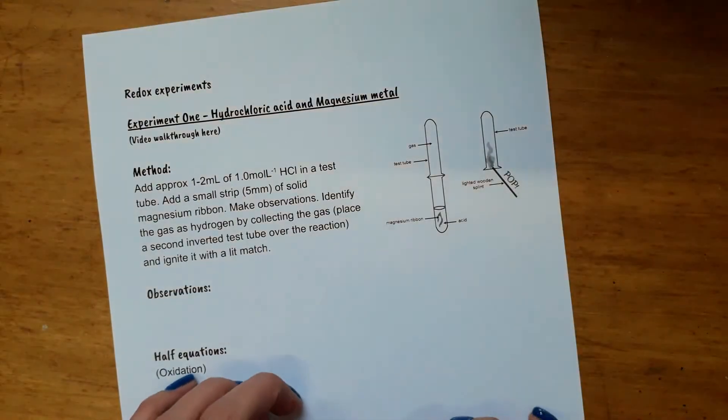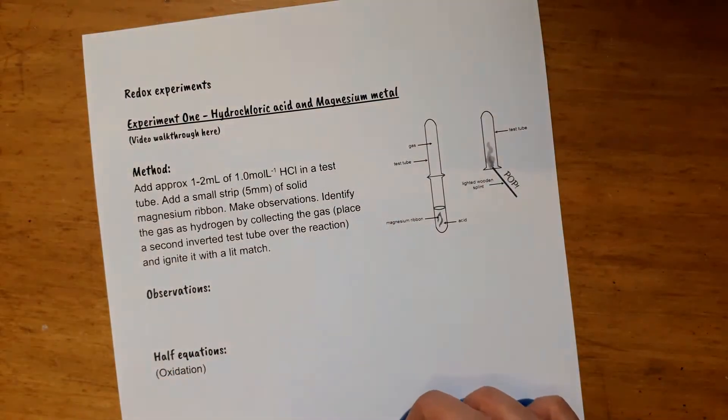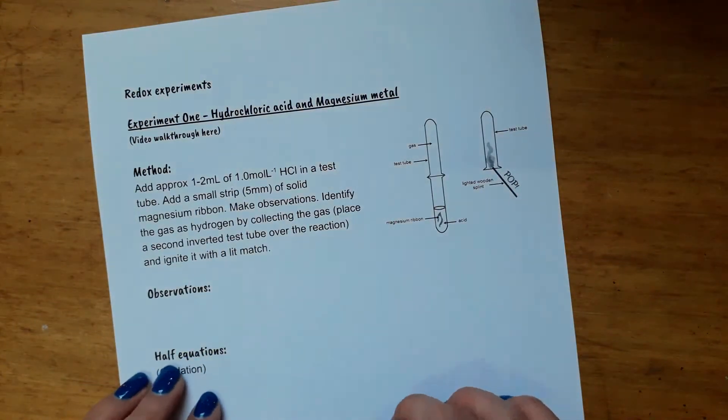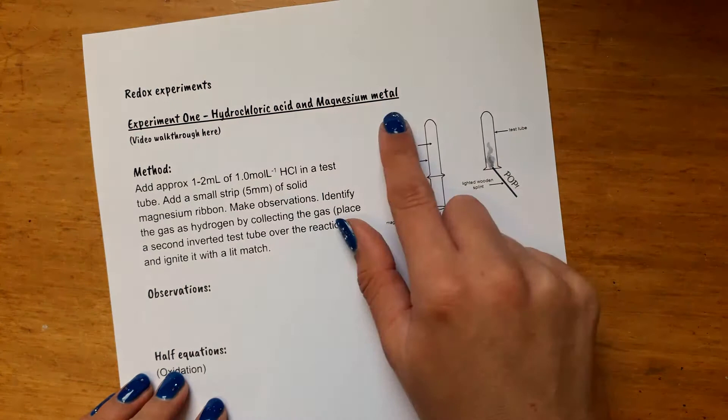Hi, so we're here just doing some redox experiments and the first one is very straightforward. It's one that you've probably seen before. It's reacting hydrochloric acid with magnesium metal.